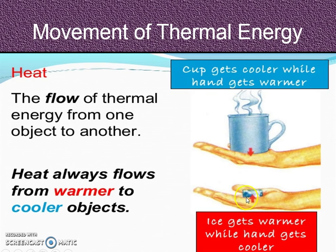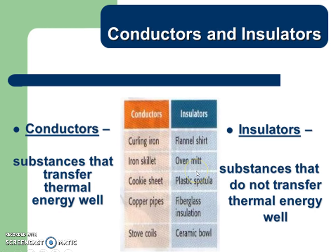Now, look at the ice cube. The ice gets warmer while the hand gets cooler, because the heat from your hand is flowing to the cooler ice cube. That's why your hand feels colder — that heat is flowing out of your hand to the ice cube. So, that's the movement of thermal energy.